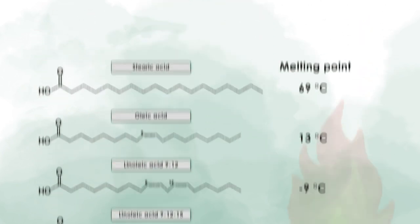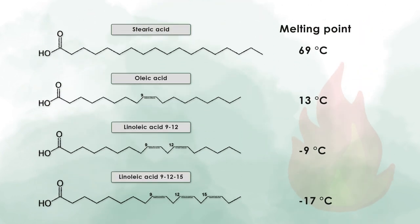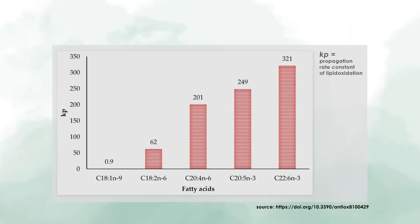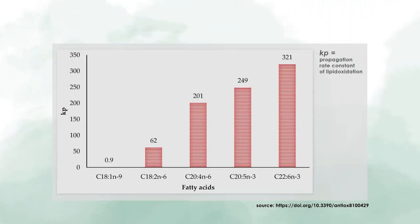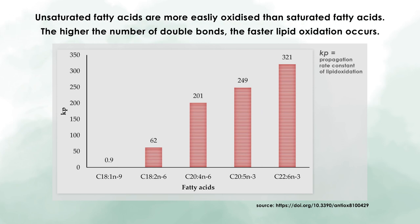The differences in the chain lengths and the numbers of double bonds result in different physical properties, like for example their melting points and also their functional properties for the human body. The presence of double bonds in the chain also influences the chemical properties of the fatty acids, especially their sensitivity to oxidative reactions. Unsaturated fatty acids show a higher reactivity to oxygen. The higher the number of double bonds in the chain, the higher is the reaction rate.